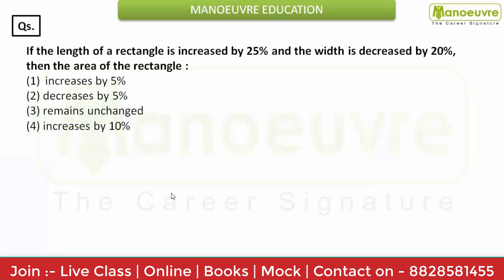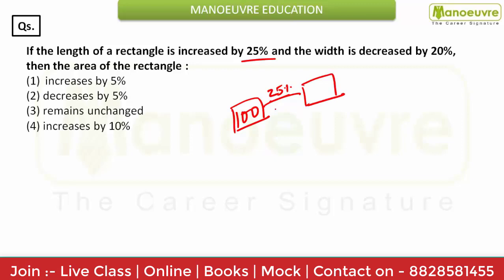The first question: if the length of a rectangle is increased by 25 percent and the width is decreased by 20 percent, then what happens to the area of the rectangle? This type of question can be done easily by the successive percentage change method. Take the value as 100. Increase it by 25 percent — 100's 25 percent is 25 — so it becomes 125.